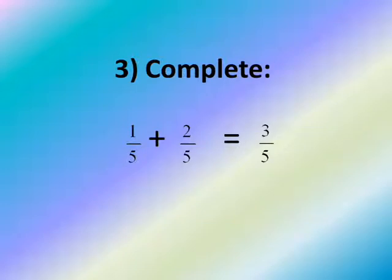Number 3, complete. 1 over 5 plus 2 over 5 equals — we add the numerators. 1 plus 2 equals 3, so the answer is 3 over 5.